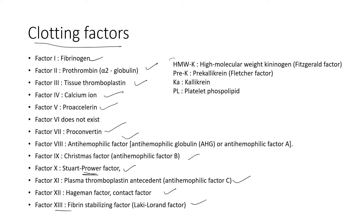Along with these, we have supporting molecules such as high molecular weight kininogen, prekallikrein, kallikrein, and platelet phospholipid. These are all associated and help speed up the process. Now, since we have understood this, we are going towards the actual process of definitive hemostasis.